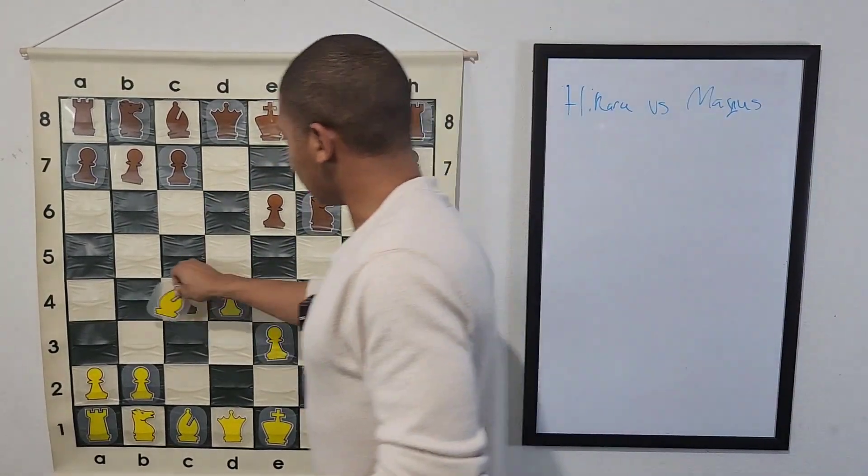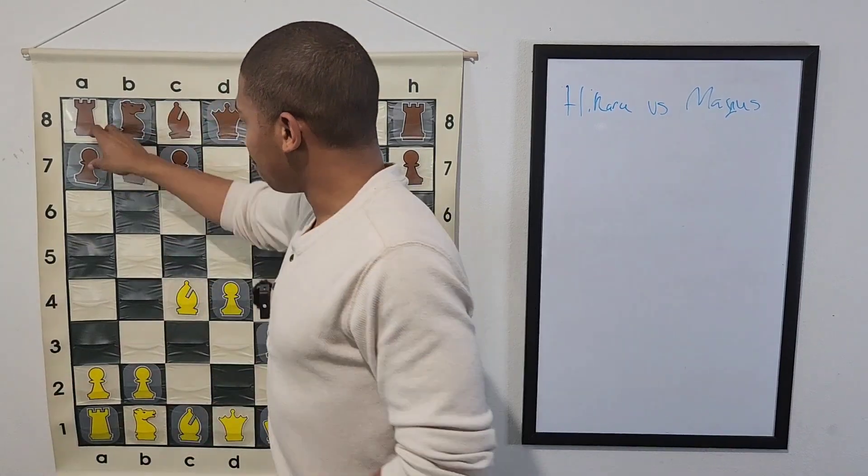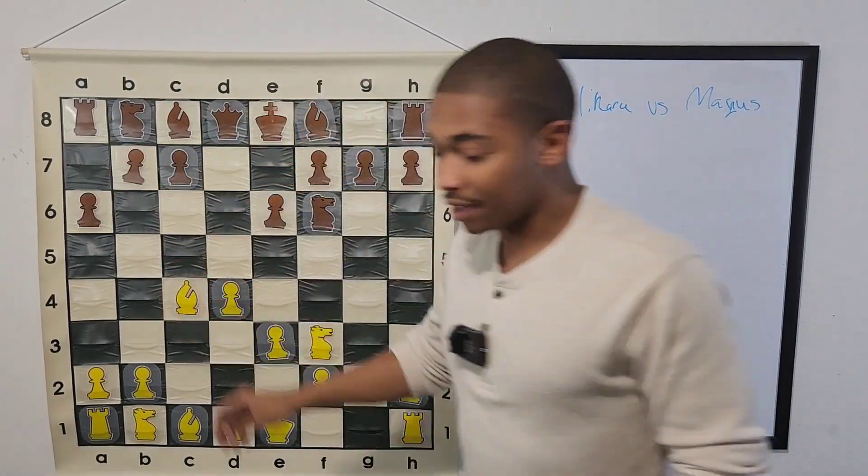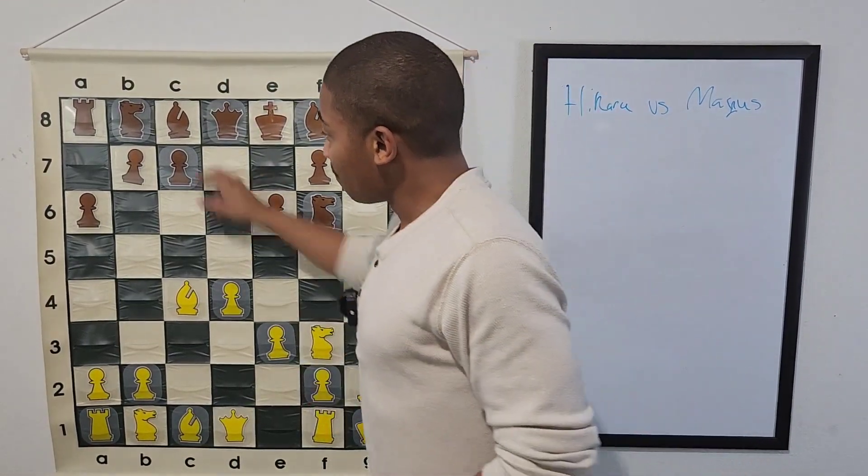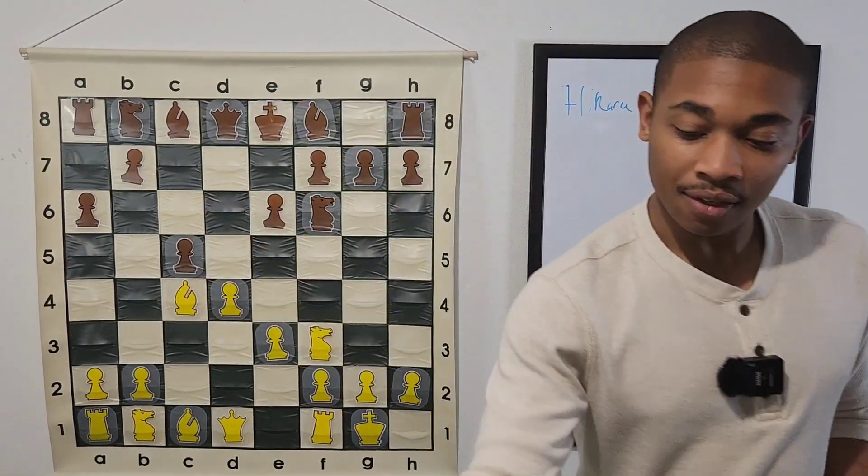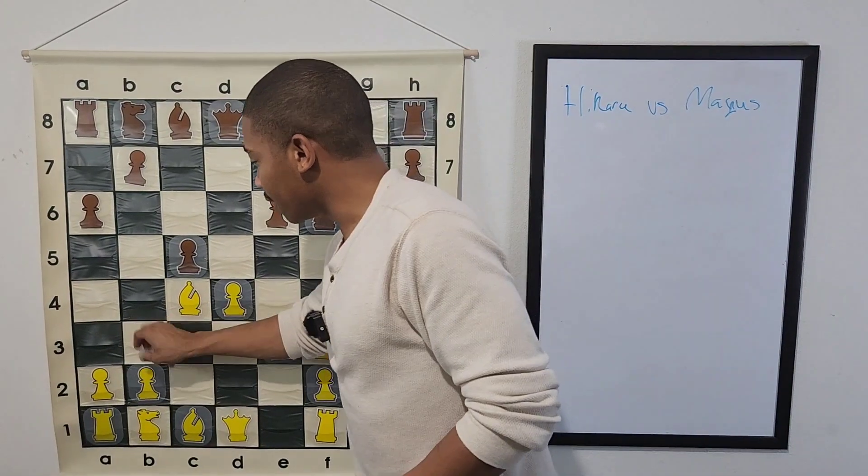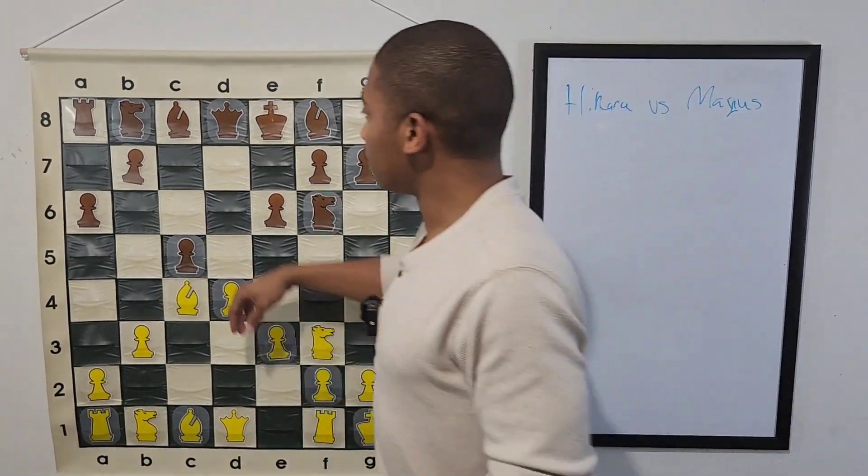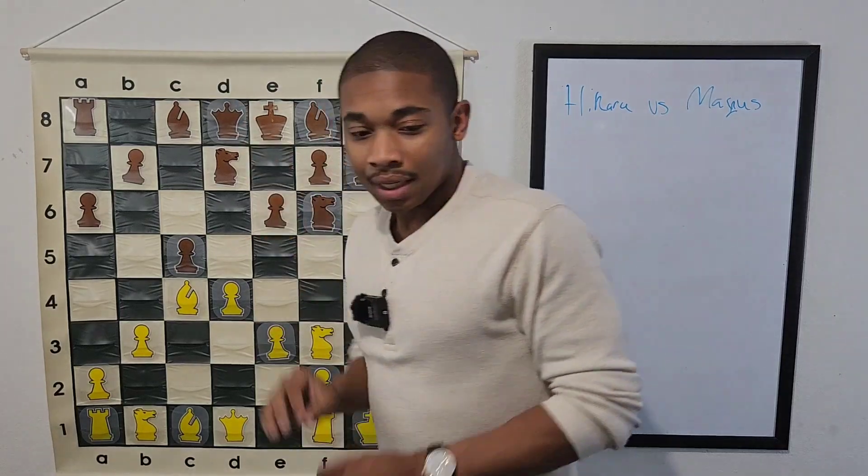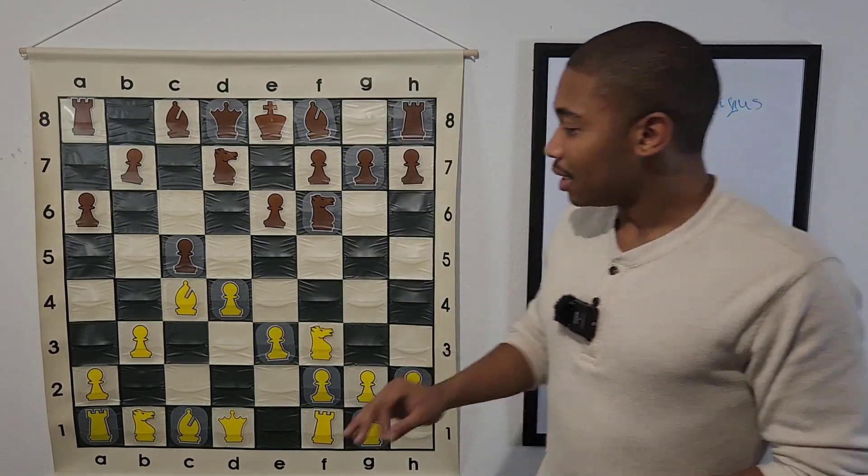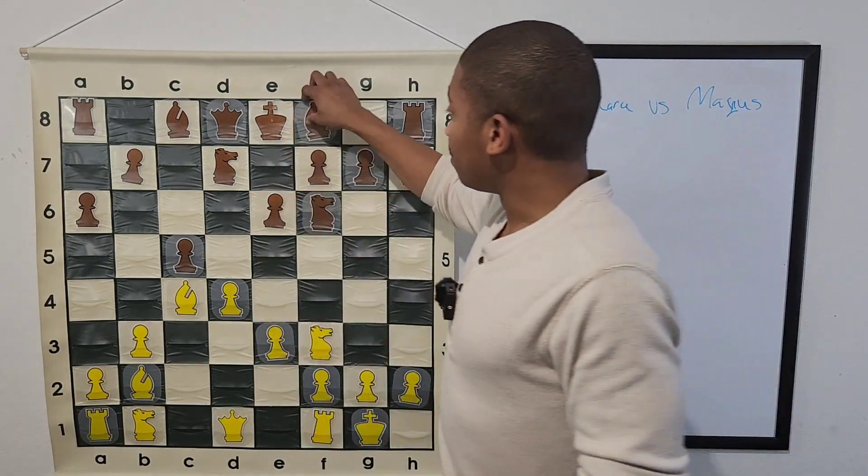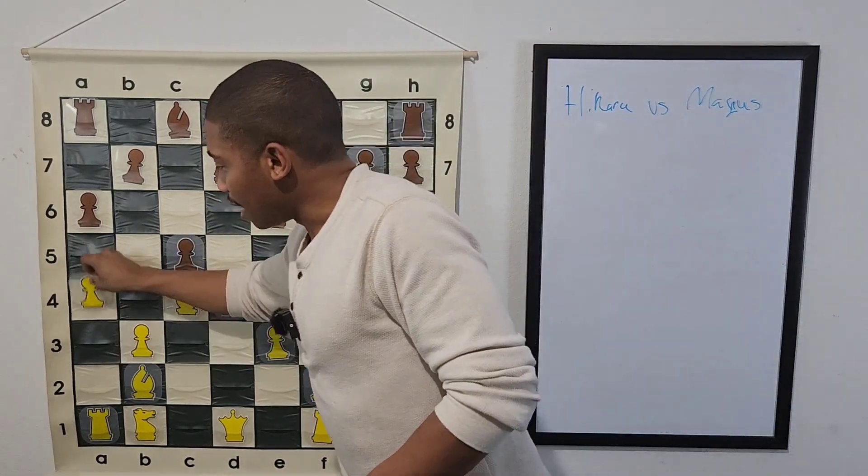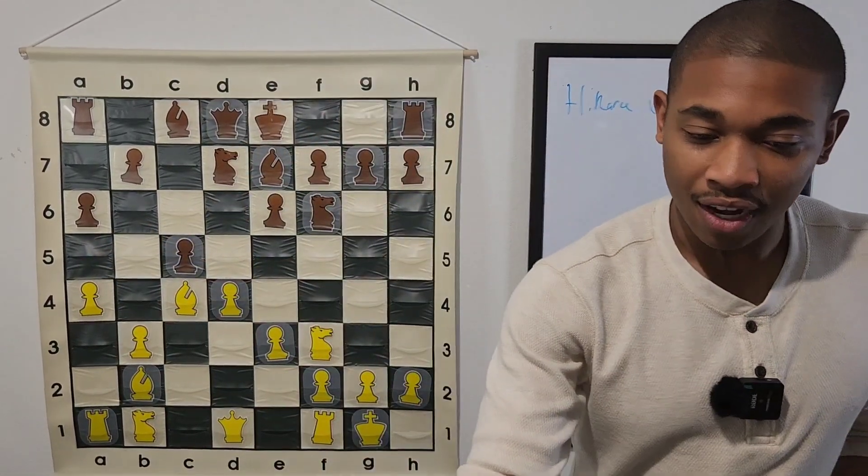After E6, Bishop takes on C4, and then we got the move A6, threatening to do B5, attacking that Bishop on C4. After that, we got Castle Kingside. Magnus Carlsen attacked the center first with the move C5, then B3. After B3, we have the move Knight B2 D7, then Bishop B2, Bishop E7, A4, stopping the move B5 from happening.